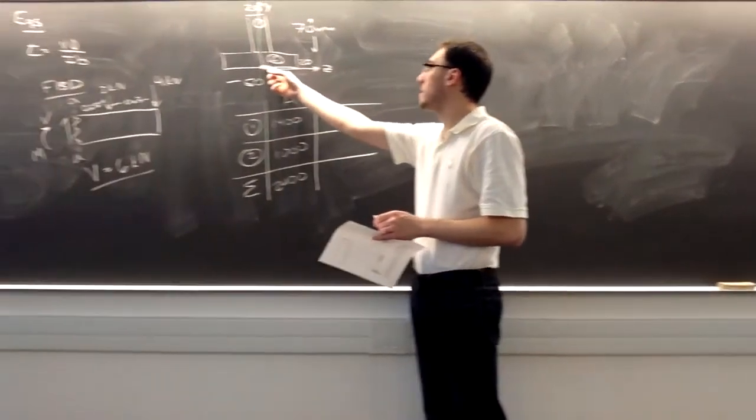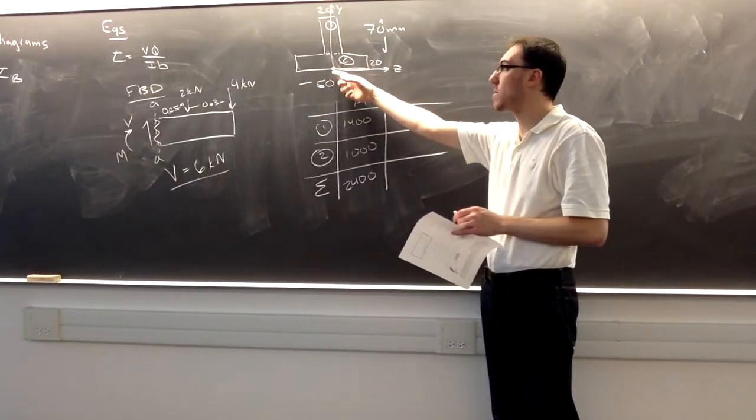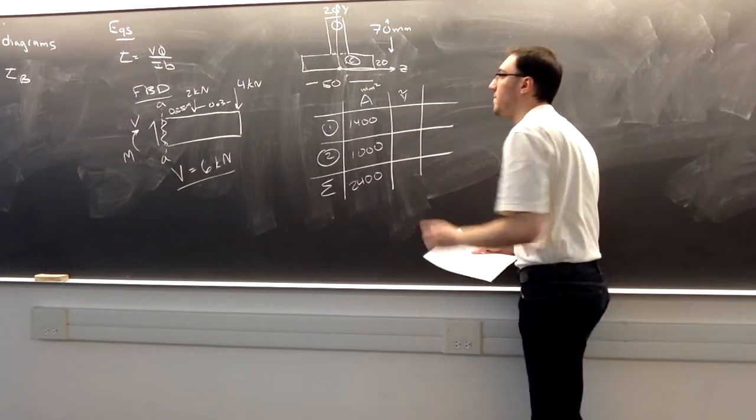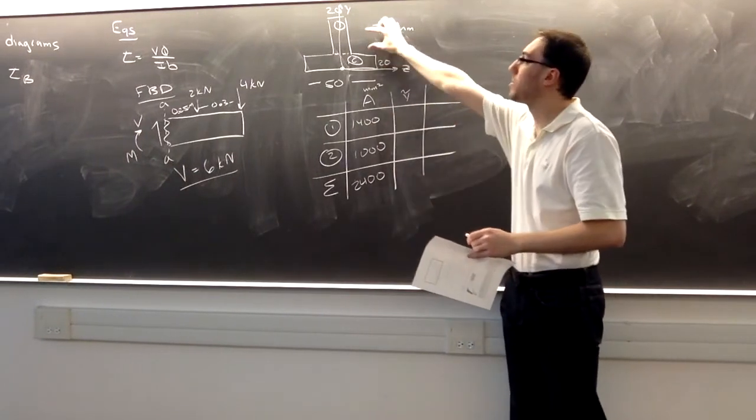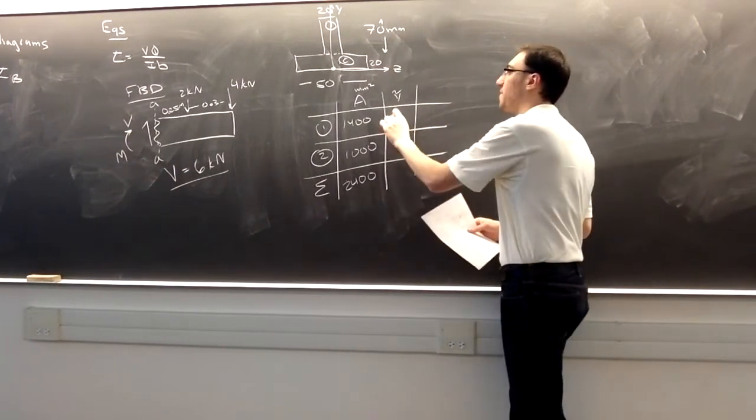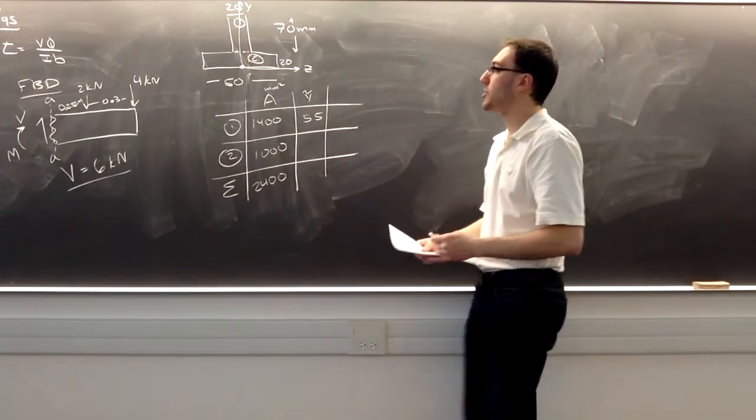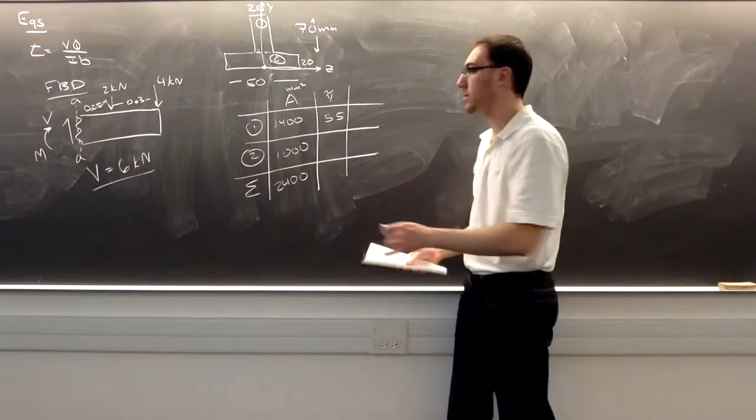I put my coordinate system at the bottom here. So in shape number one, its value of Y tilde will be 20 plus 35 is 55 millimeters above the origin. And shape two will be 10 millimeters above the origin.